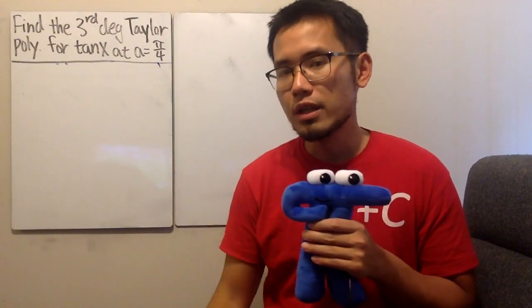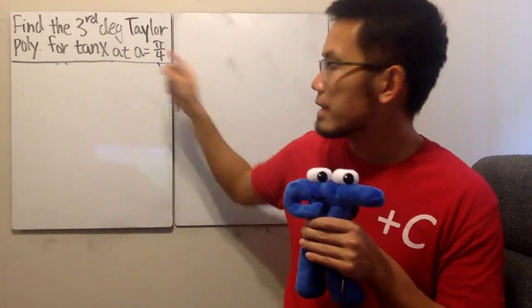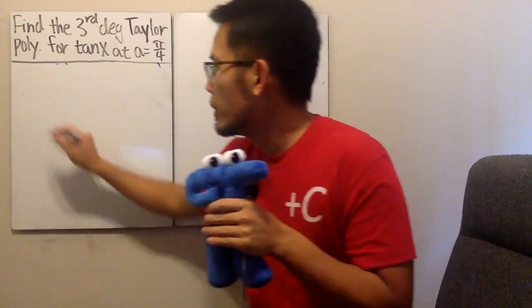Okay, we are going to find the third degree Taylor polynomial for tangent x at pi over 4. Here we go.